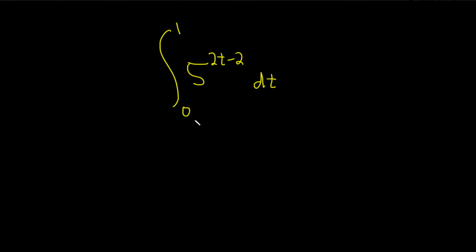So we're going to start by making a u substitution. We're going to let this piece here be our u. So we'll let u equal 2t minus 2.